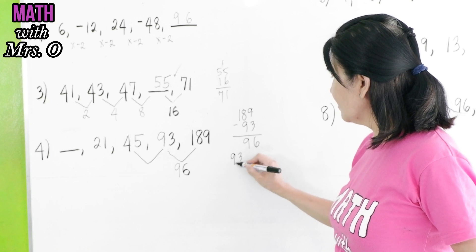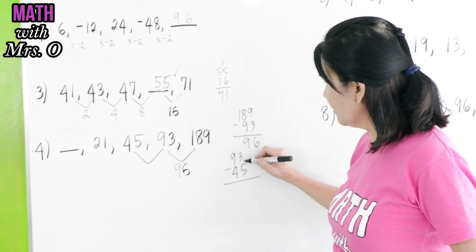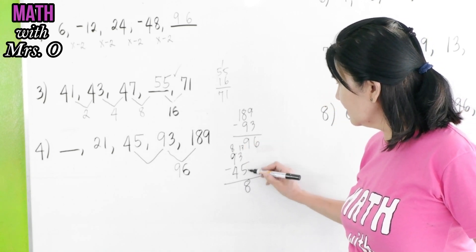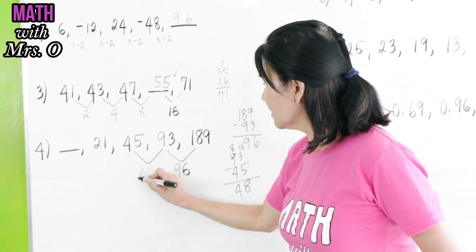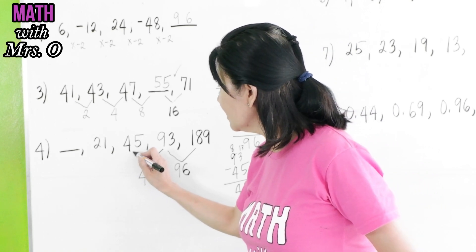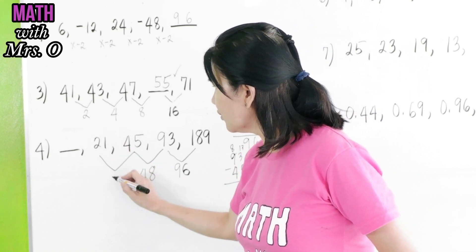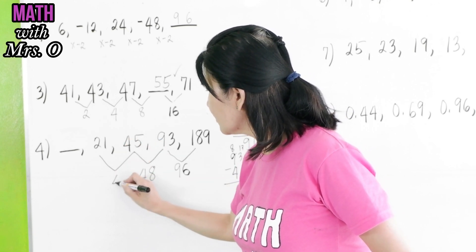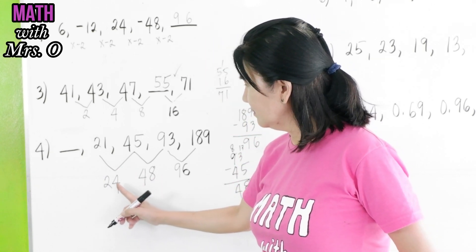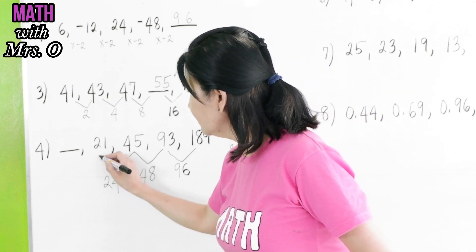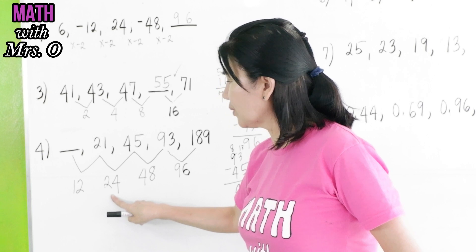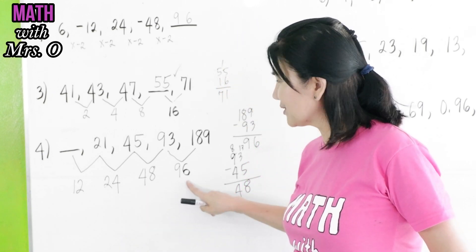Now, 93 minus 45. So there is a difference of 48. Do you now see the pattern here? Let's continue. 45 minus 21 is 24. Do you now see the difference? 24, 48, and 96. What do you think is the number here? 12. So let's check. 12 times 2 is 24. 24 times 2 is 48. And 48 times 2 is 96.